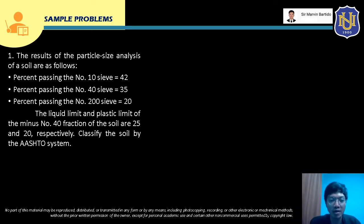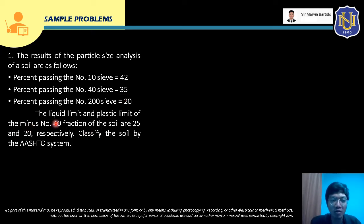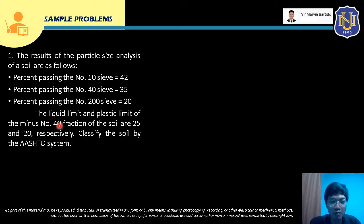Sample Problem 1: The liquid limit and plastic limit of the minus No. 40 fraction of a soil are 25 and 20, respectively. The sieve analysis results are: 42% passing No. 10, 35% passing No. 40, and 20% passing No. 200. Classify the soil using the AASHTO system.